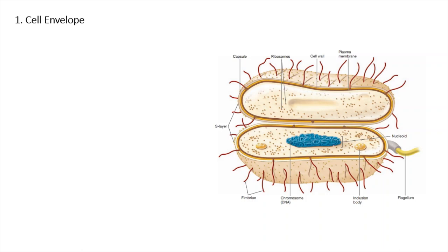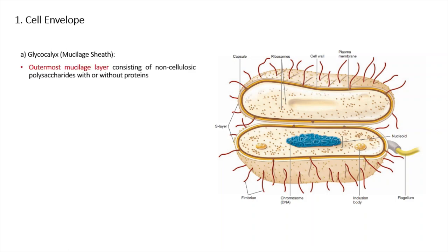The first component is the cell envelope, which is basically the outer covering present in a bacterial cell. It consists of 3 parts. Number 1 is the glycocalyx, also called the mucilage sheet. It is the outermost mucilaginous layer consisting of non-cellulosic polysaccharides with or without proteins. If it is loose, glycocalyx is called the slime layer. If it is tough, it is called a capsule.